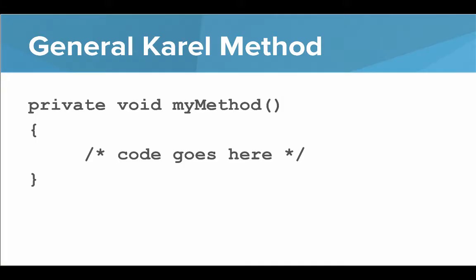So this is the format for a general Carol method: private, void, my method, open parentheses, close parentheses, open curly brace, the code for the method, and then close curly brace. It's the same format we use for turn right.